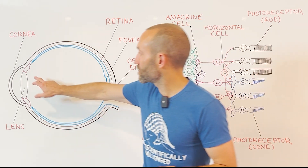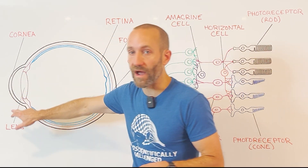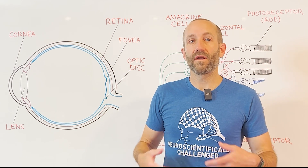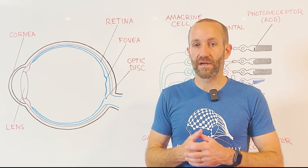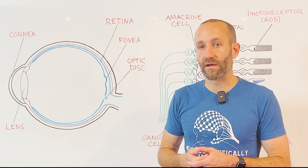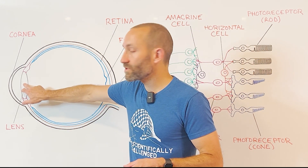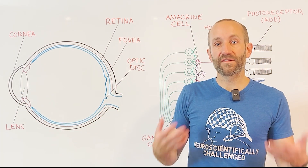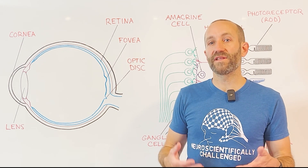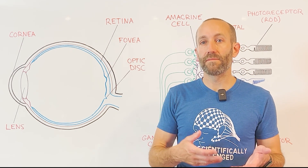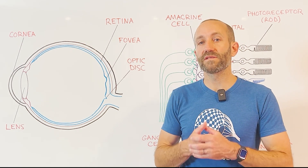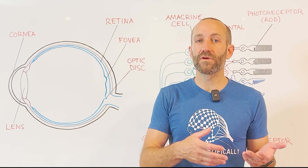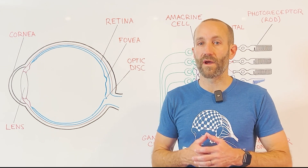The cornea is a transparent layer at the front of the eye that lets light in and bends or refracts those light rays to direct the light onto the retina. The lens also helps to direct light on the retina. It has less refractive power than the cornea, but its shape can be modified by muscles in the eye called ciliary muscles, and changing the shape of the lens can help to maintain focus for objects that are closer or farther away.